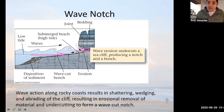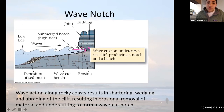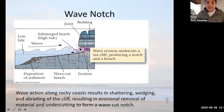These waves erode and undercut the sea cliffs, producing notches. As the waves continue to erode, these notches can progress further and produce cave or cavern-like structures. Eventually, all of the overlying material and weight places so much pressure on this cave or cavern that it collapses into the space produced by the wave notch.